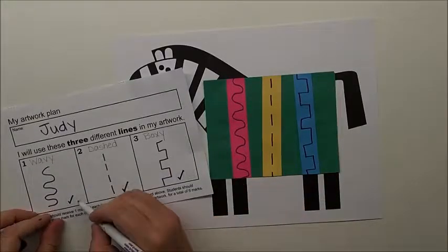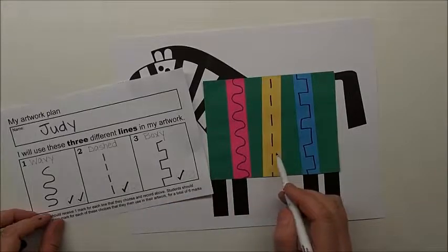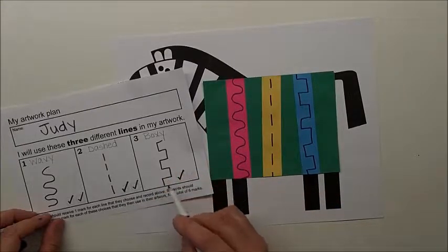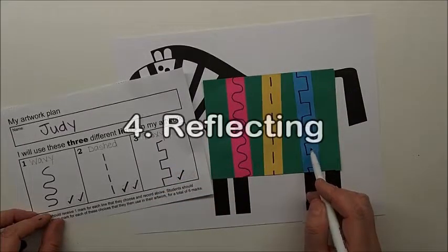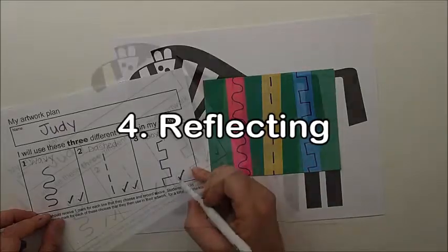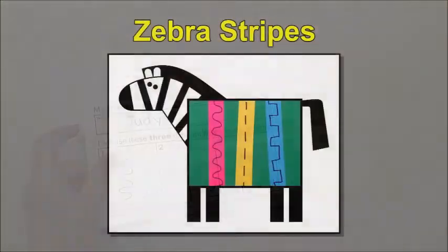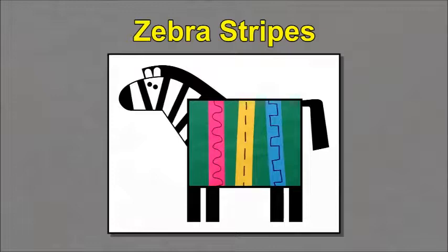A mark can now be given for each line that was transferred from the plan to the finished artwork. Discussion might include questions such as: did I remember to include all of the lines in my plan? And, what artwork would I like to do next?